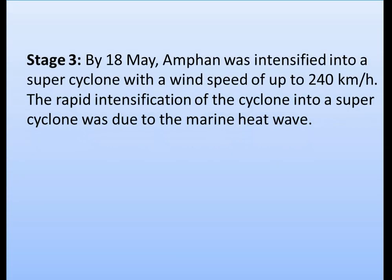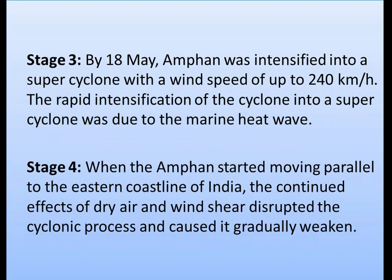In Stage 3, by May 18, Amphan was intensified into a super cyclone with wind speed of up to 240 kilometers per hour. The rapid intensification into a super cyclone was due to the marine heat wave, which we will discuss shortly. In Stage 4, when Amphan started moving parallel to the eastern coastline of India, the continued effects of dry air and wind shear disrupted the cyclonic process and caused it to gradually weaken.